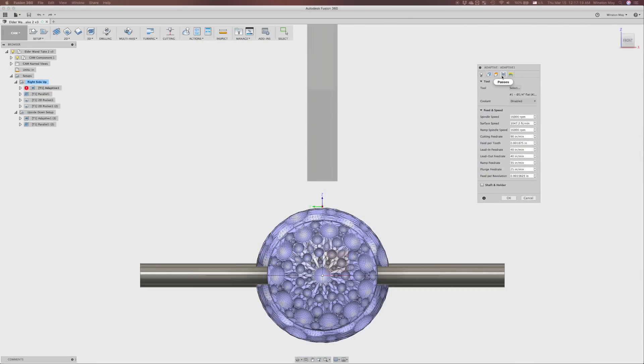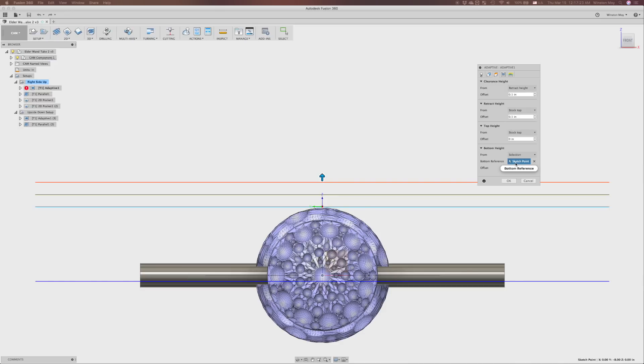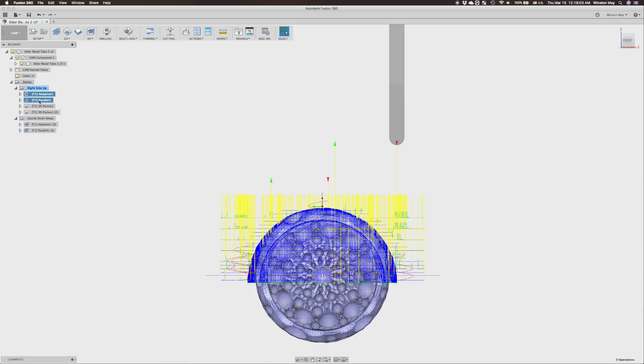So to allow for this, I set my first adaptive toolpath to bottom out 0.06 inches below the midpoint of my model. This would make room for the parallel toolpath to plunge to the required depth.